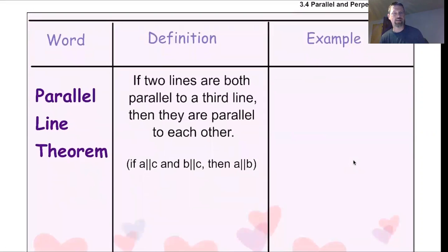So we got some definitions. If two lines are both parallel to a third line, then they're parallel to each other. In other words, if A is parallel to C and B is parallel to C, then A and B are parallel. That's called the parallel line theorem. It's not too bad, it should be kind of common sense.